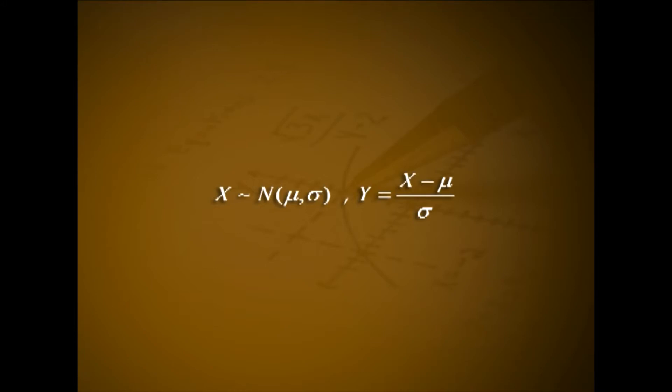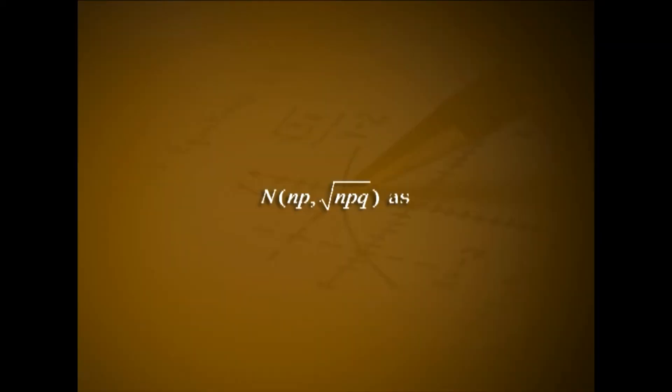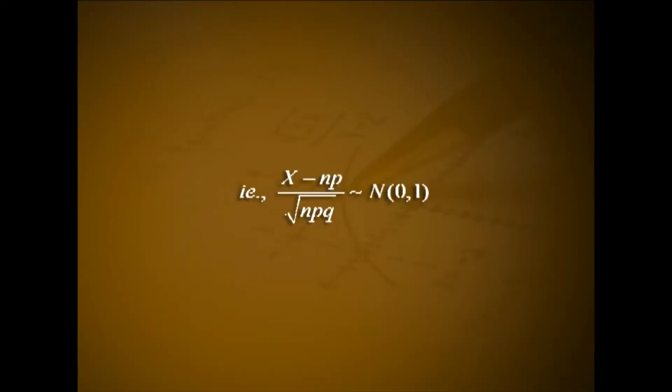Standard normal distribution: a normal distribution with mean μ = 0 and standard deviation σ = 1 is called a standard normal distribution. When x ~ N(μ, σ), y = (x - μ)/σ follows standard normal distribution. A random variable following binomial distribution with parameters n and p tends to N(np, √(npq)) as n becomes large, provided neither p nor q is very small. That is, (x - np)/√(npq) ~ N(0,1) as n becomes large.